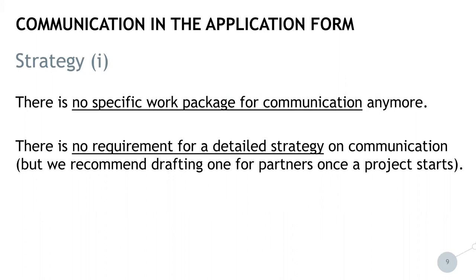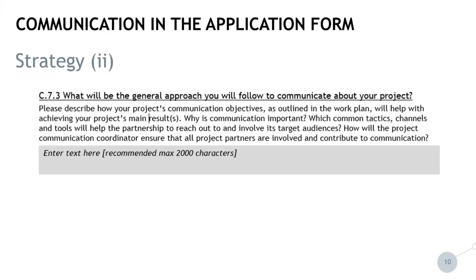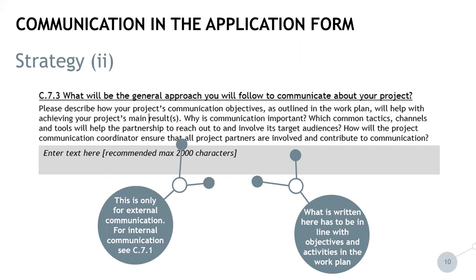Instead, the role and approach to communication have to be briefly specified in the application form in chapter C7-3. Here, you will have to outline the general approach to communication according to the guiding questions. This has to be in line with objectives and activities in the work plan. And this is only for external communication. For internal communication, please see chapter C7-1 of the application form.